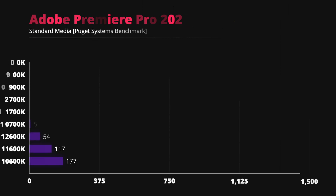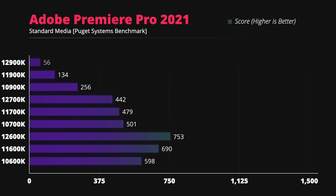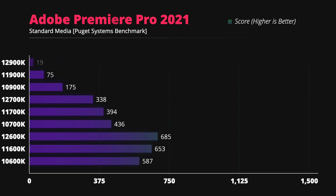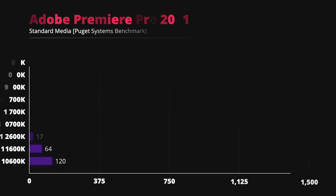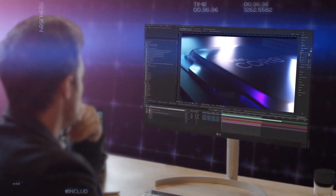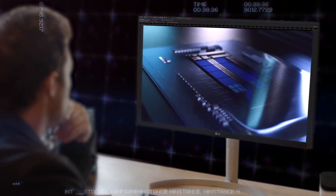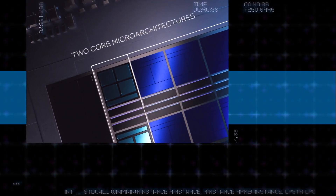I should explain the Premiere Pro results. The 12700K managed to score higher than the 12900K despite having fewer cores. Most likely it is just an optimization issue that will be fixed later, but it is what it is right now — another small reliability problem.